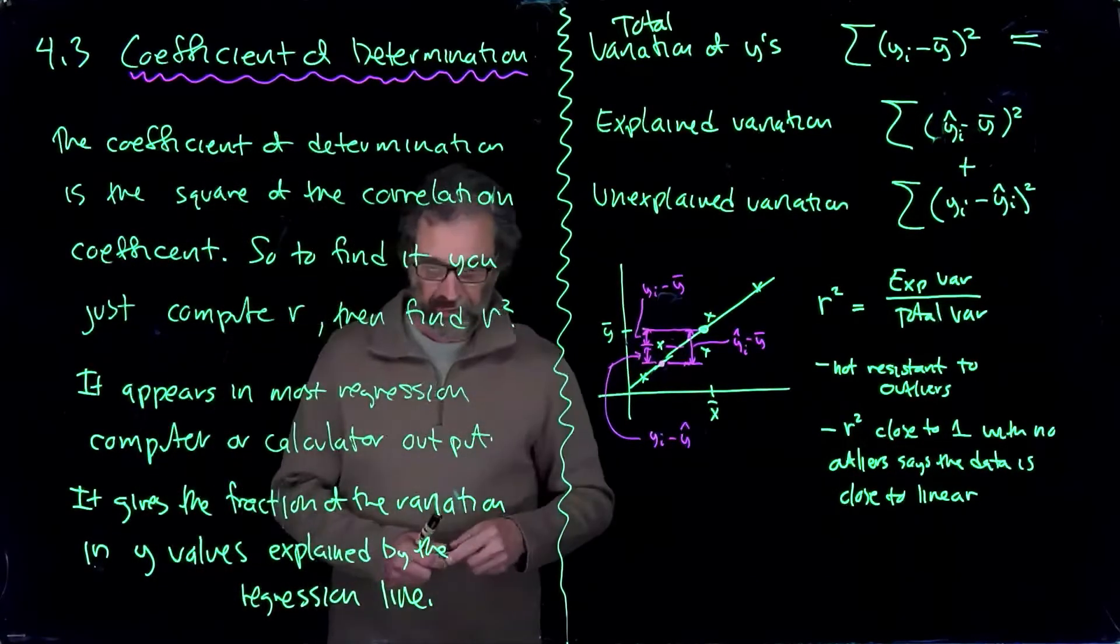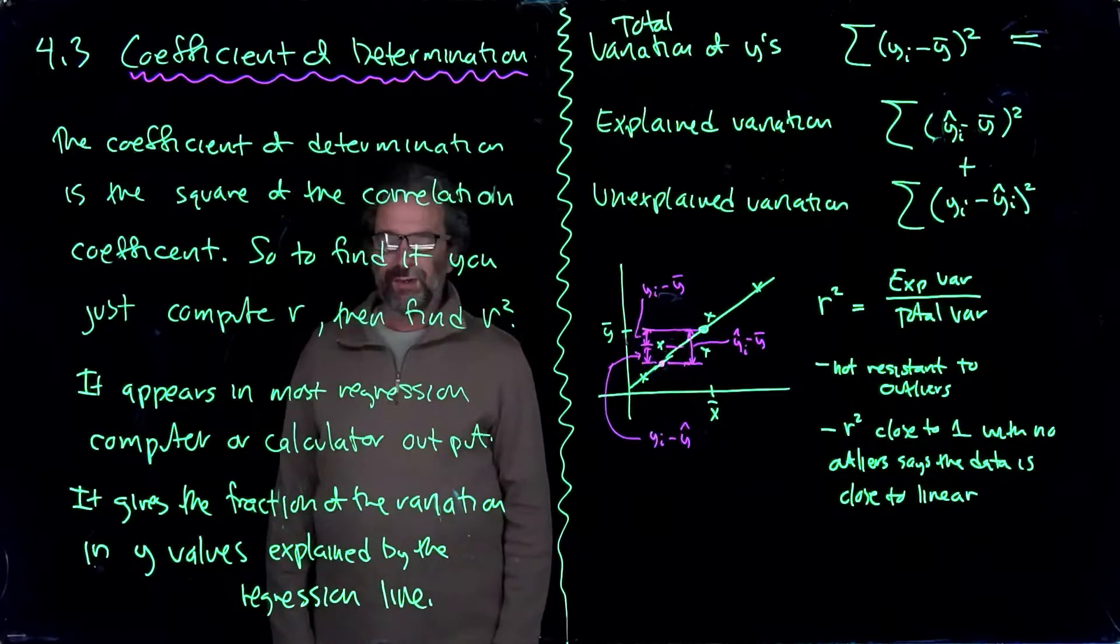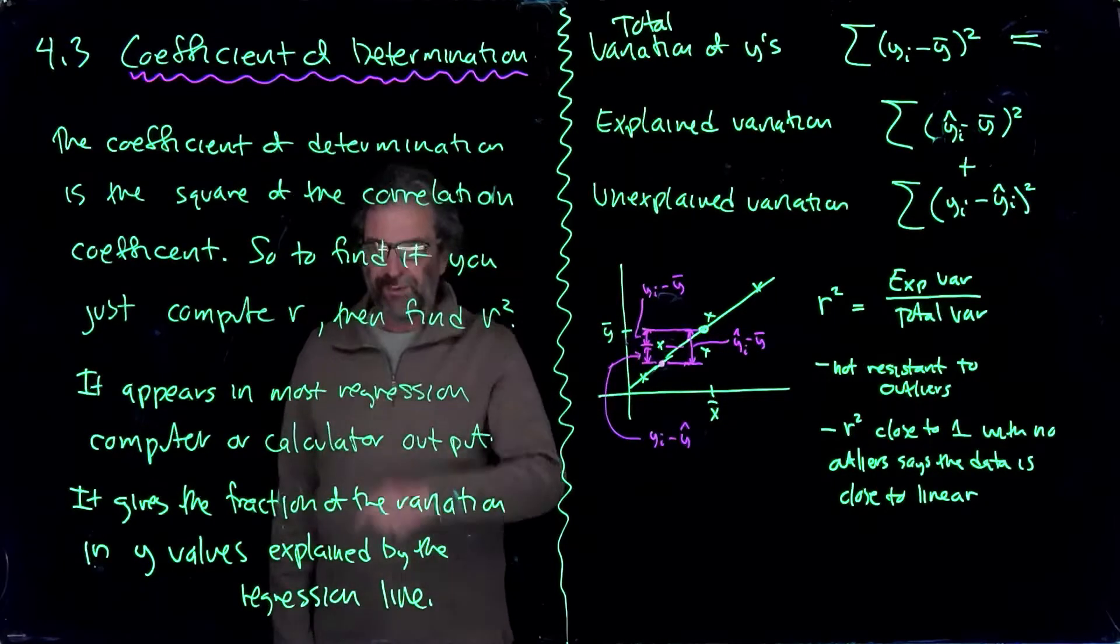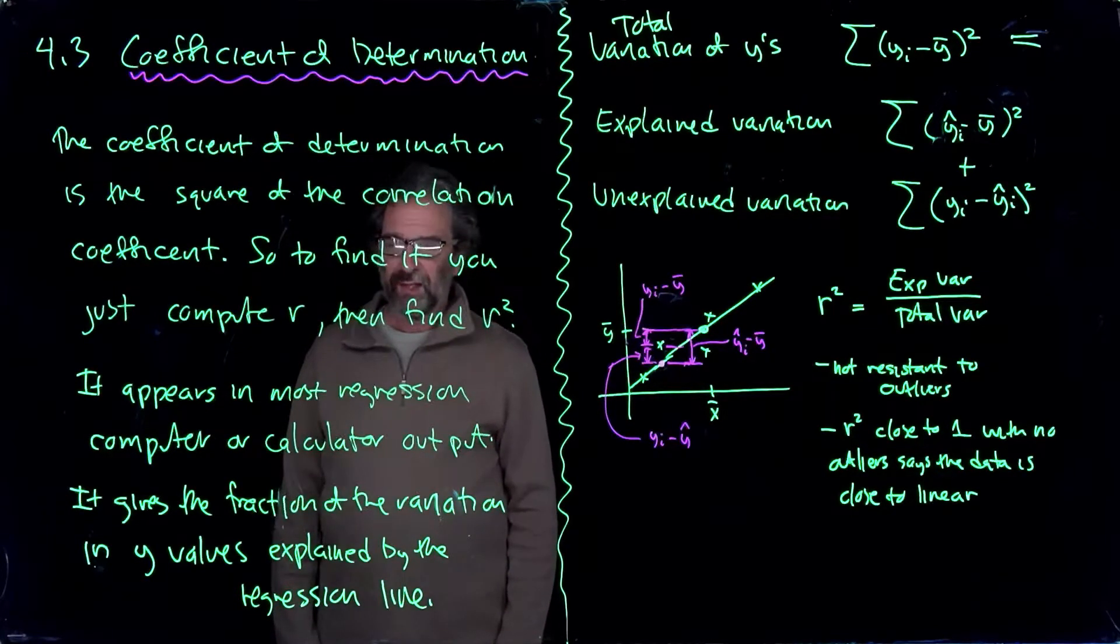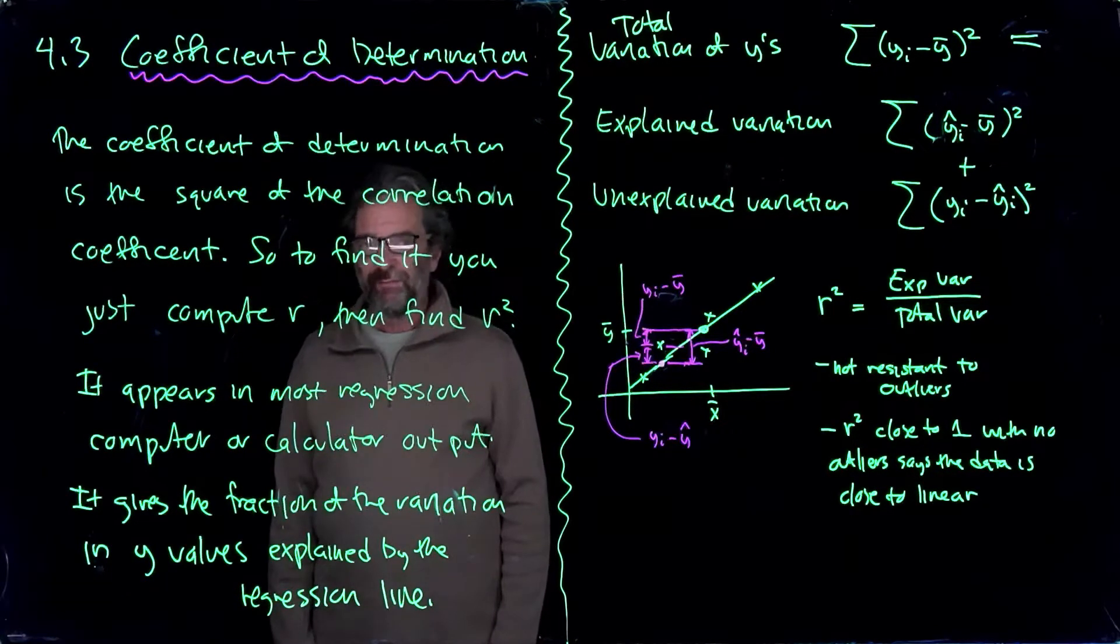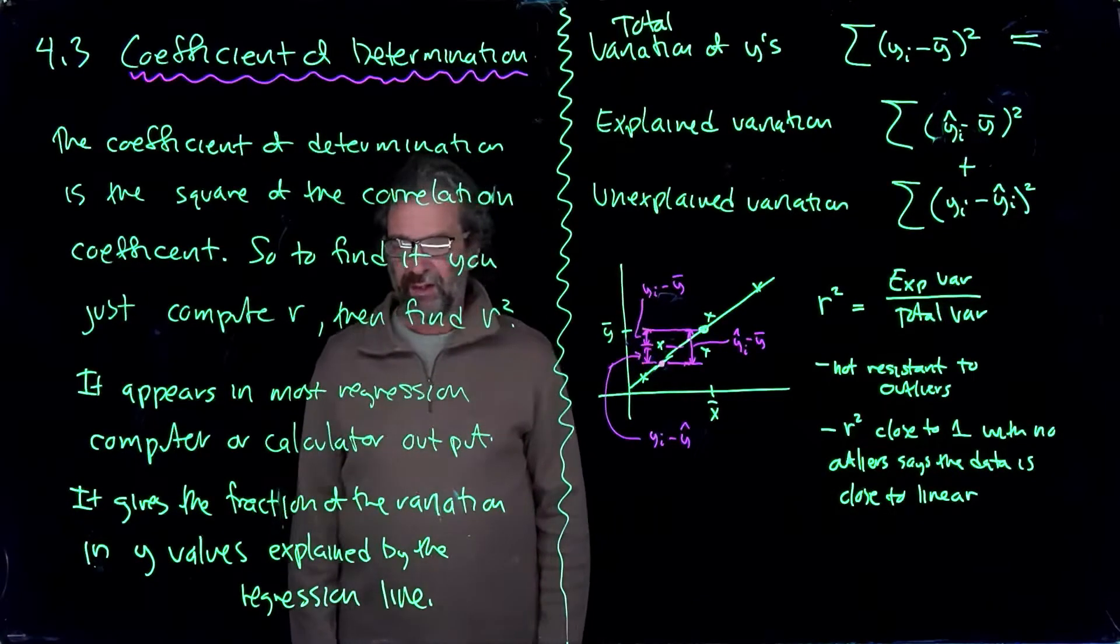Okay, so what you'll see when you compute r squared, r is between minus 1 and 1, so r squared is between 0 and 1. And we interpret those fractions as a percent. So an r squared of 0.9 says that 90% of the variation in the y values is explained by the regression line.